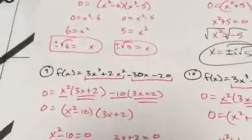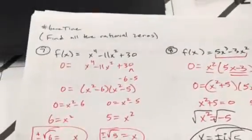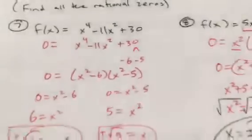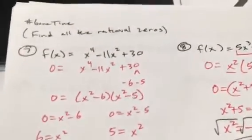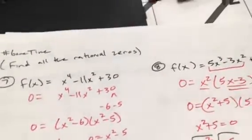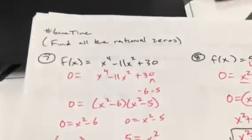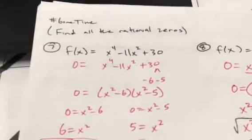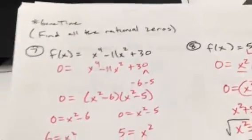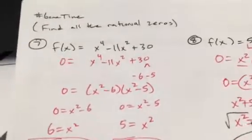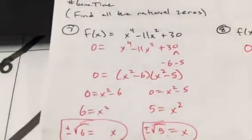Here are some of the answers. Number seven says find all rational zeros. We're going to involve i here, so we got rid of the rational part in class. Anyway, we're going to find all the zeros for problems 7 through 12.